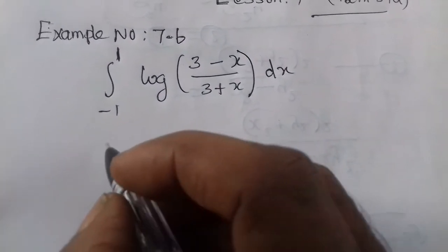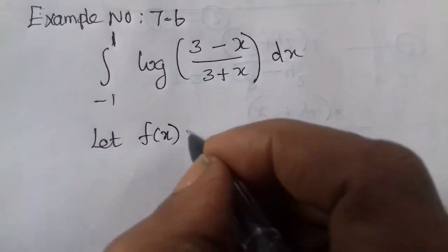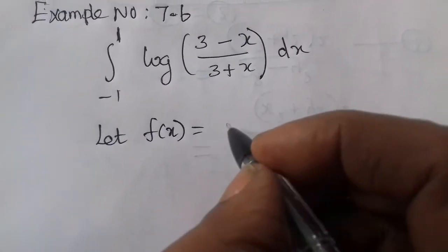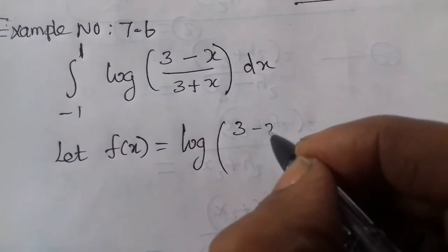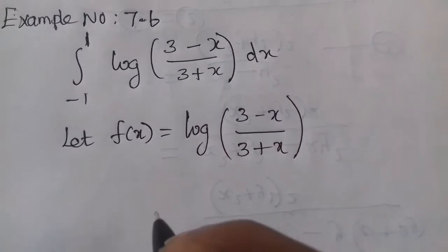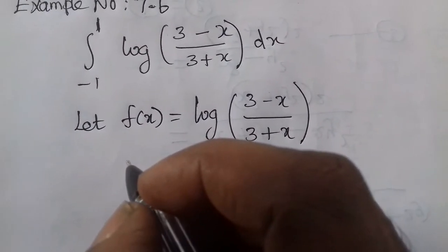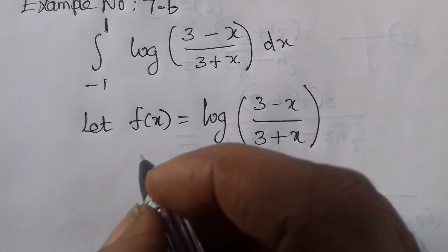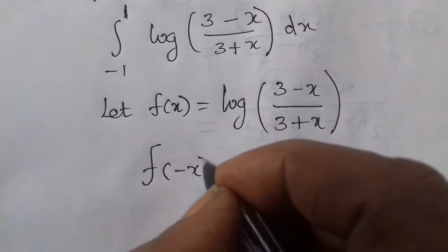Let f(x) equal to log of (3 minus x) divided by (3 plus x). To check whether it is an odd or even function, replace x with minus x and substitute, so we compute f(minus x).